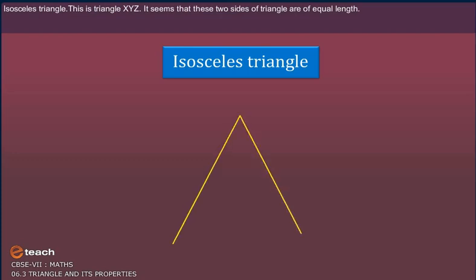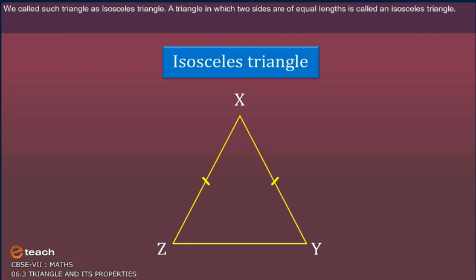Isosceles Triangle. This is triangle XYZ. It seems that these two sides of the triangle are of equal length. We call such a triangle an isosceles triangle. A triangle in which two sides are of equal length is called an isosceles triangle.